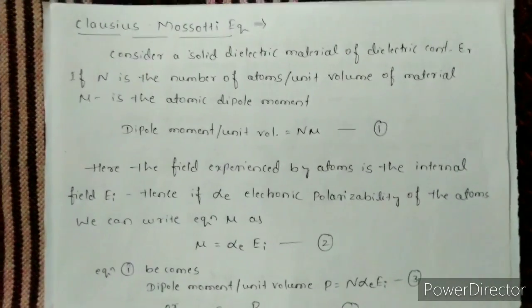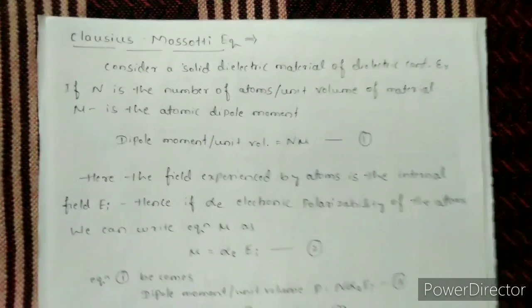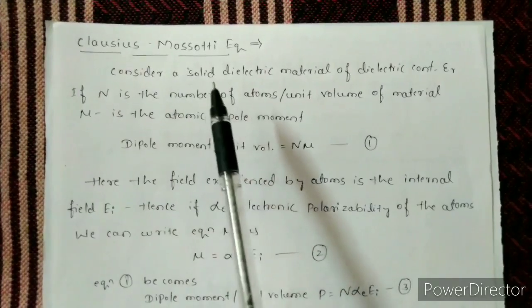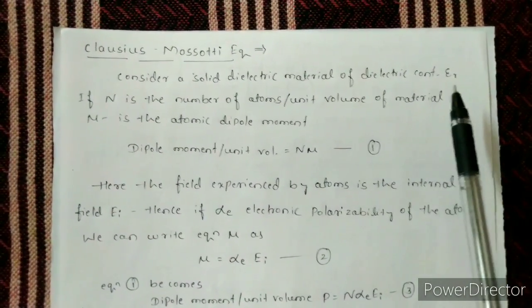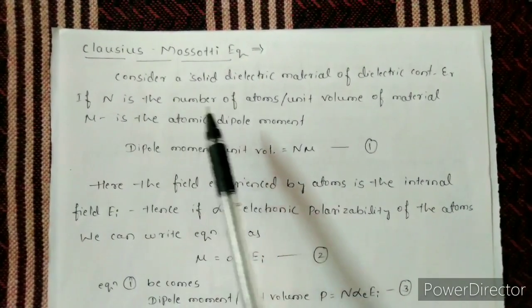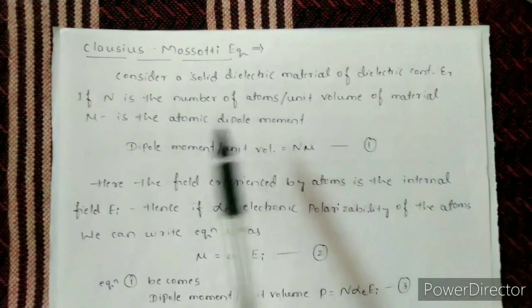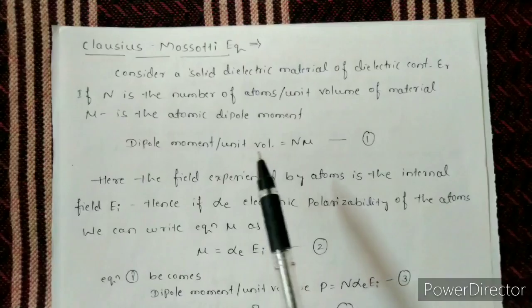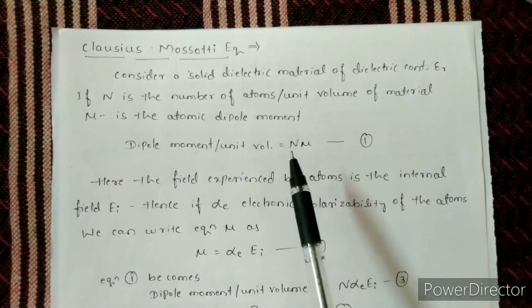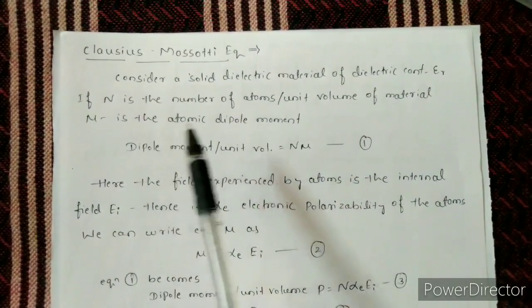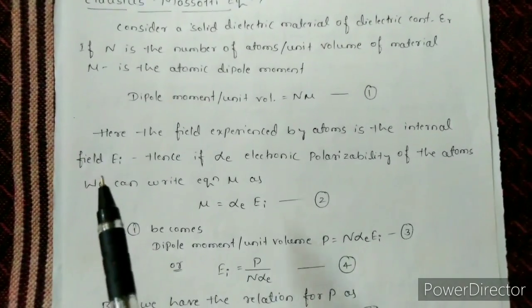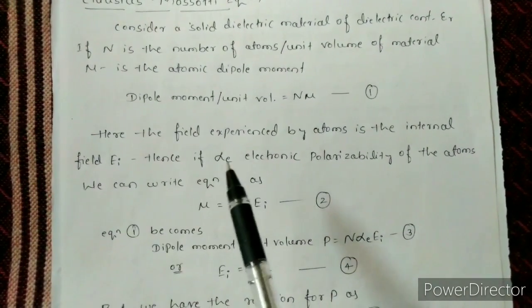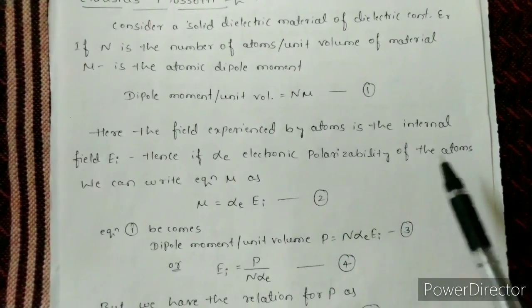Now we will see the derivation of an important equation in dielectrics — the Clausius-Mossotti equation. Consider a solid dielectric material with dielectric constant εᵣ. If n is the number of atoms per unit volume and μ is the atomic dipole moment, then the total dipole moment per unit volume can be written as n·μ. The field experienced by the atom is the internal field EI, and αE is the electronic polarizability of the atoms.